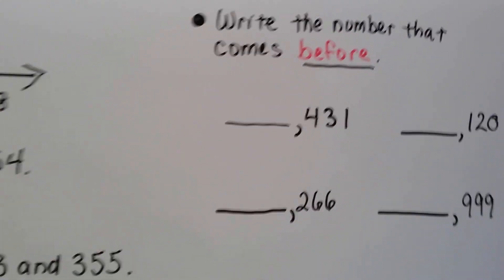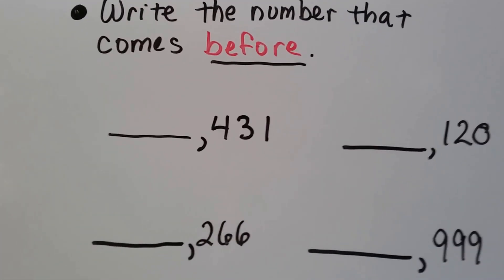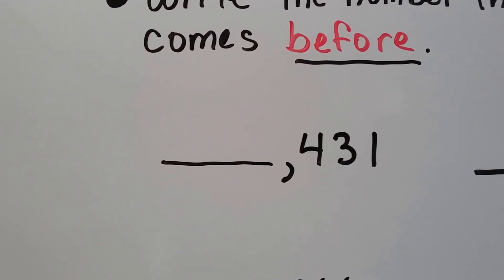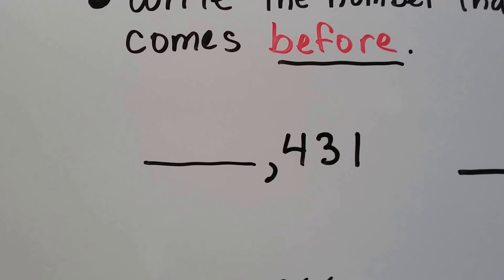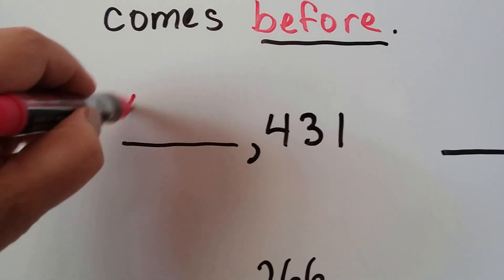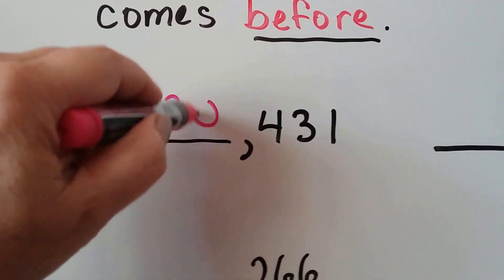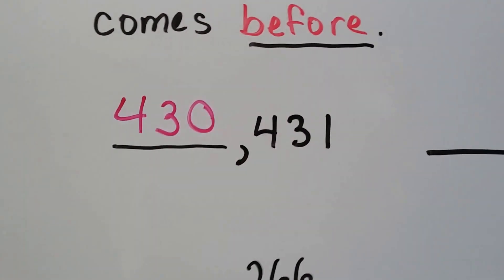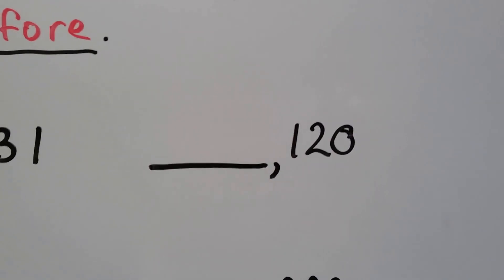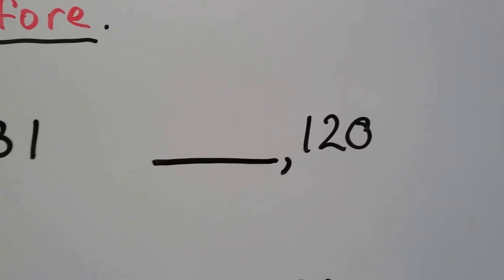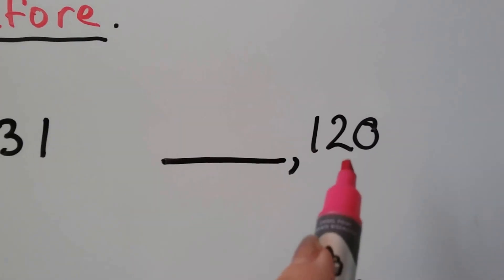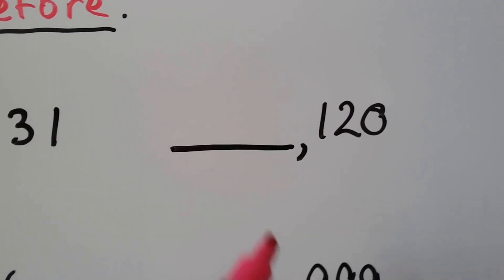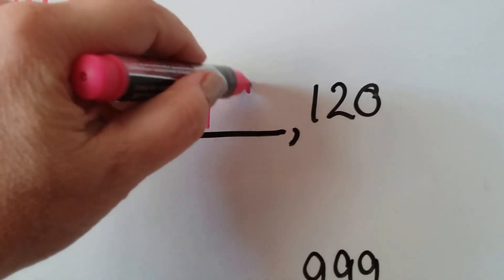Let's write the number that comes before these numbers. What number comes before 431? Before 431 would be 430, wouldn't it? That's one less. What comes before 120? We can think: what comes before 20? 19. So that means 119 comes before 120.